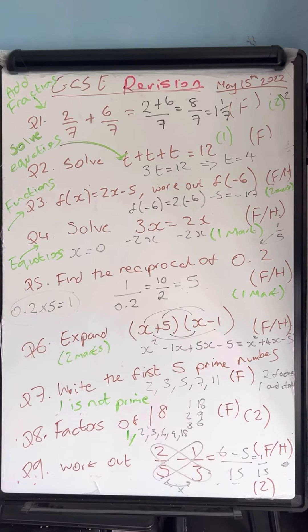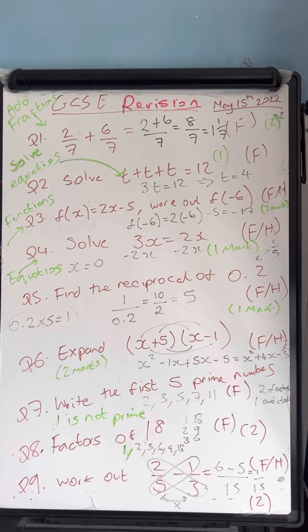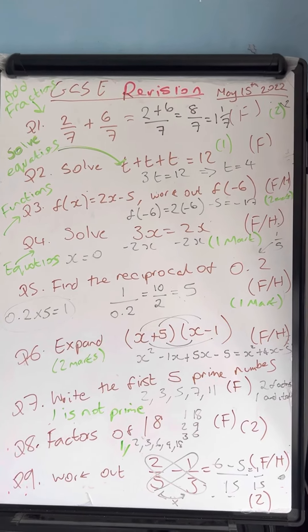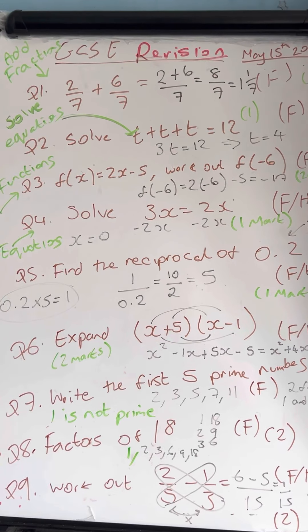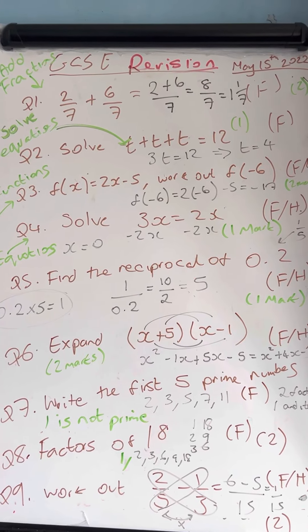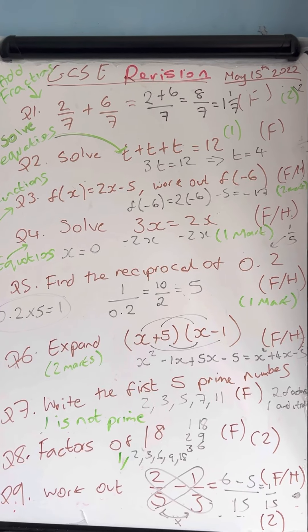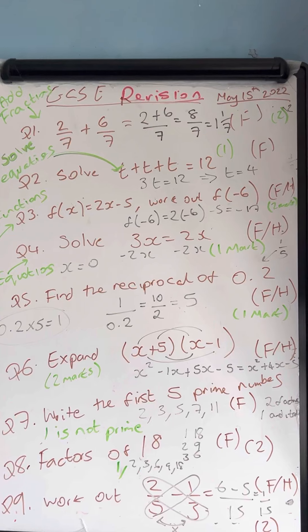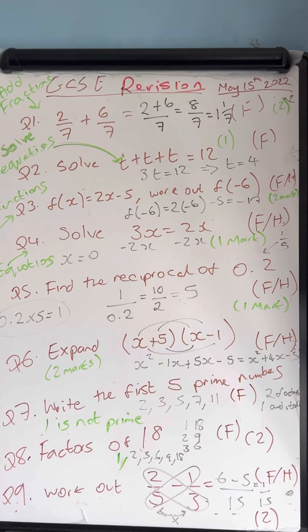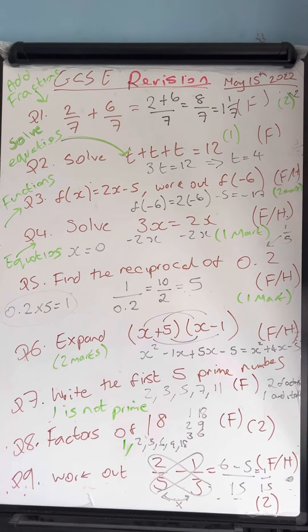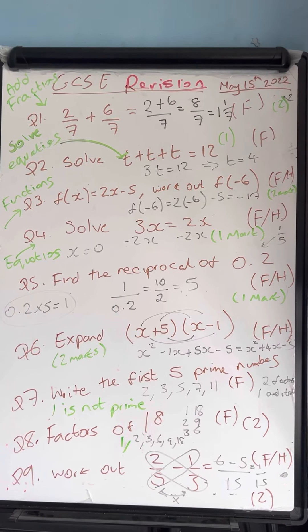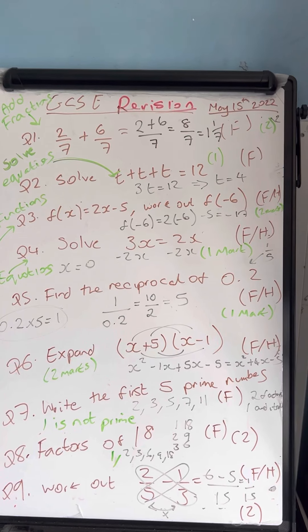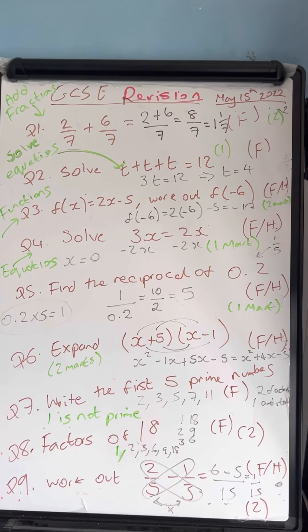This is question number one. We're going to work out two sevenths plus six sevenths. Remember that when you're adding fractions, the denominators have to be the same. If they're the same, then I can just add the numerators. Two plus six is eight, so I get eight sevenths, which is one and one seventh as the mixed number. Eight sevenths is my improper fraction or top-heavy fraction. Then one and one seventh is my mixed number. Sevens into eight go once, and then the remainder is one.